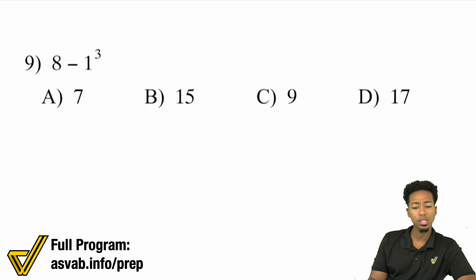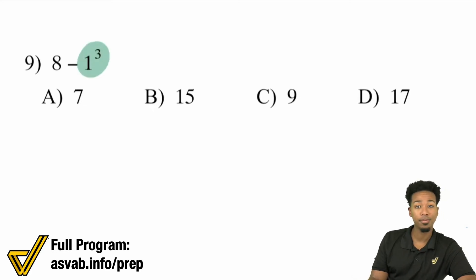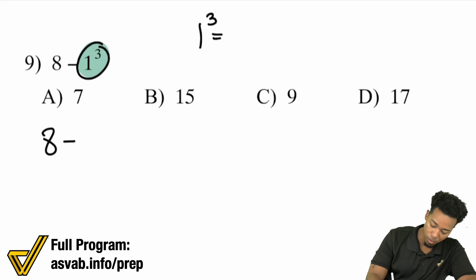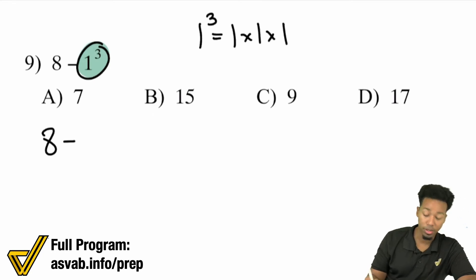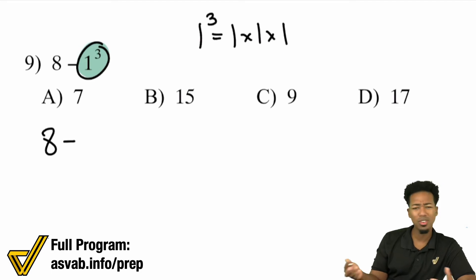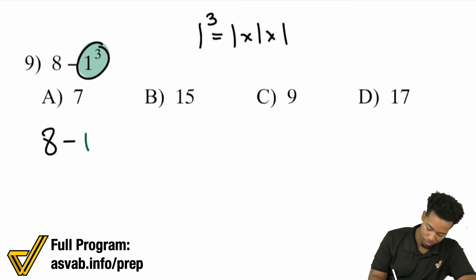Here's another one: 8 minus 1 to the power of 3. That's an exponent right there. We have 8 minus 1 cubed. Remember, 1 cubed means 1 times 1 times 1 — the exponent tells you you're multiplying 1 by itself 3 times. And anything times 1 is just itself, so 1 times 1 times 1 is just 1. This turns into 8 minus 1, which equals 7. And that's A.